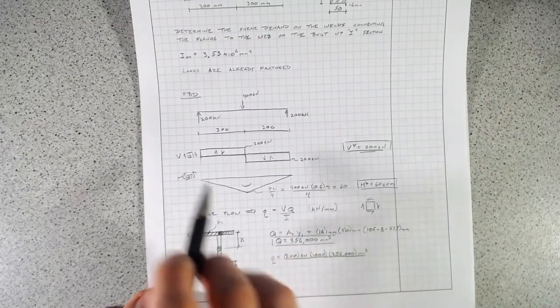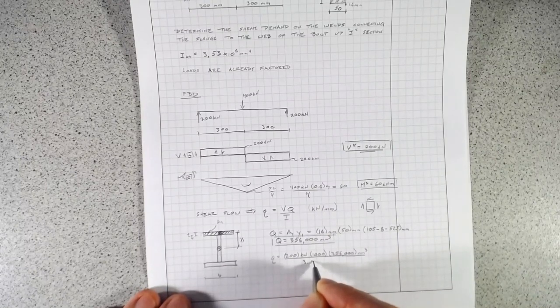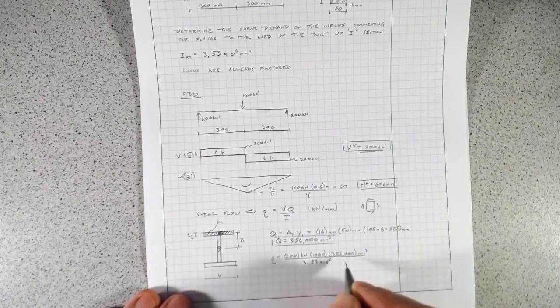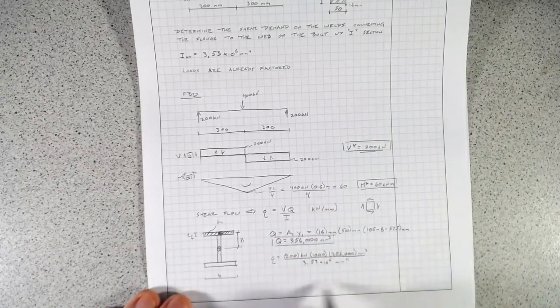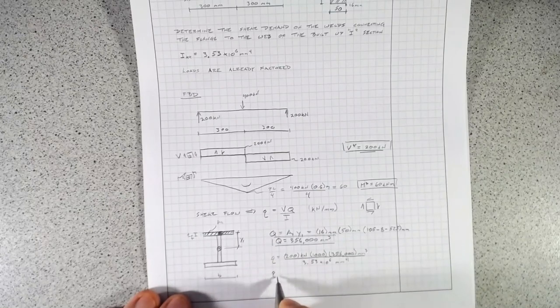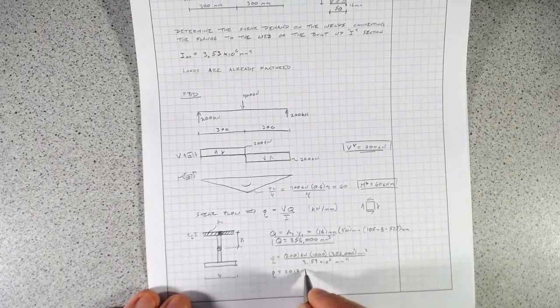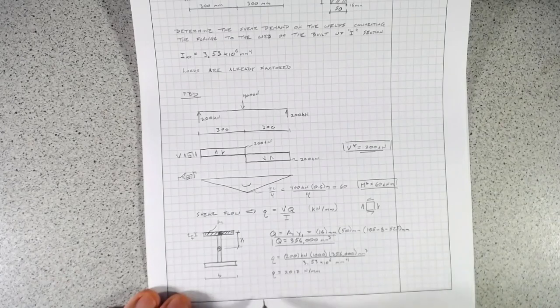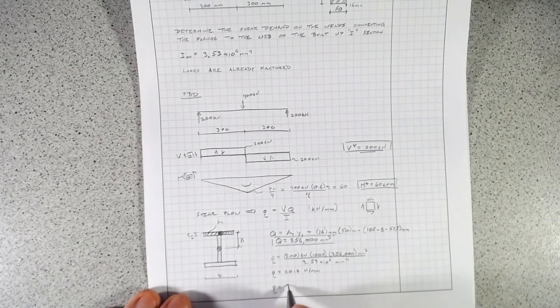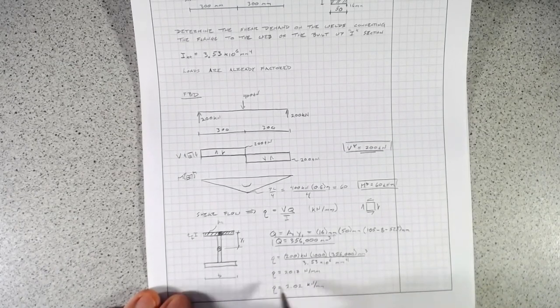We now have Q, we have I, we have V. We can find out what our shear flow and hence our shear demand will be at the flange. So little q equals 200 kilonewtons times 1,000 times 356,000 millimeters cubed, all of that over our moment of inertia, which is 3.53 times 10 to the sixth millimeters to the fourth. If we work all of this out, we get that Q equals 2,017 newtons per millimeter. Let's get this into kilonewtons, and we get q equals 2.02 kilonewtons per millimeter.